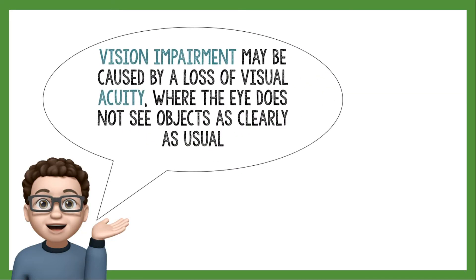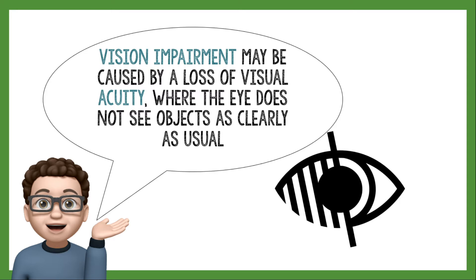Vision impairment may be caused by a loss of visual acuity where the eye does not see objects as clearly as usual. So this is what represents vision impairment — it's kind of a loss, not completely. You can still see, but not as clearly as you should.